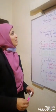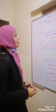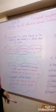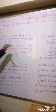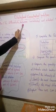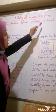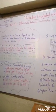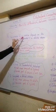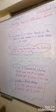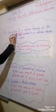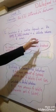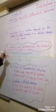Hello, dear students. In grade 7, our lesson today is to differentiate between concentrated and diluted solutions. The concentration of a solution depends on the quantity of solute dissolved in a given volume of solvent.